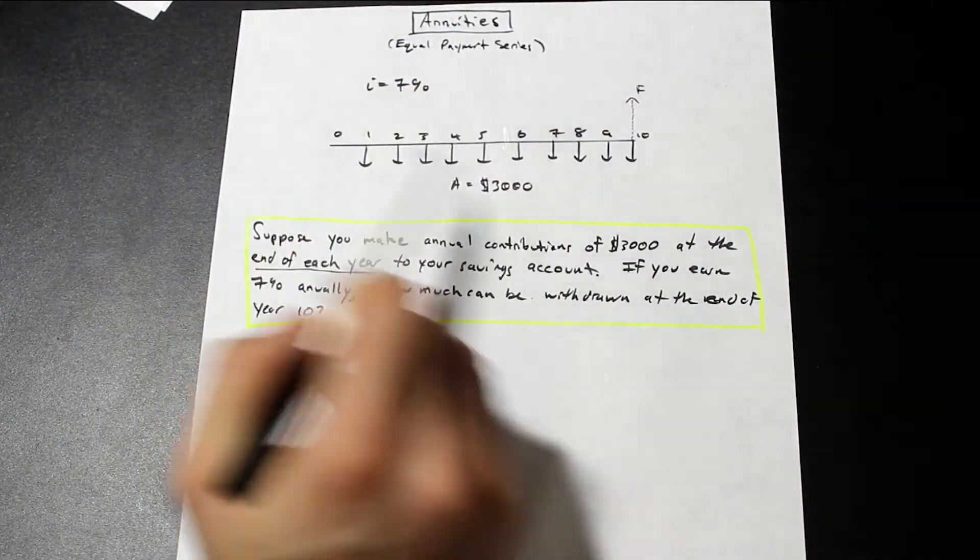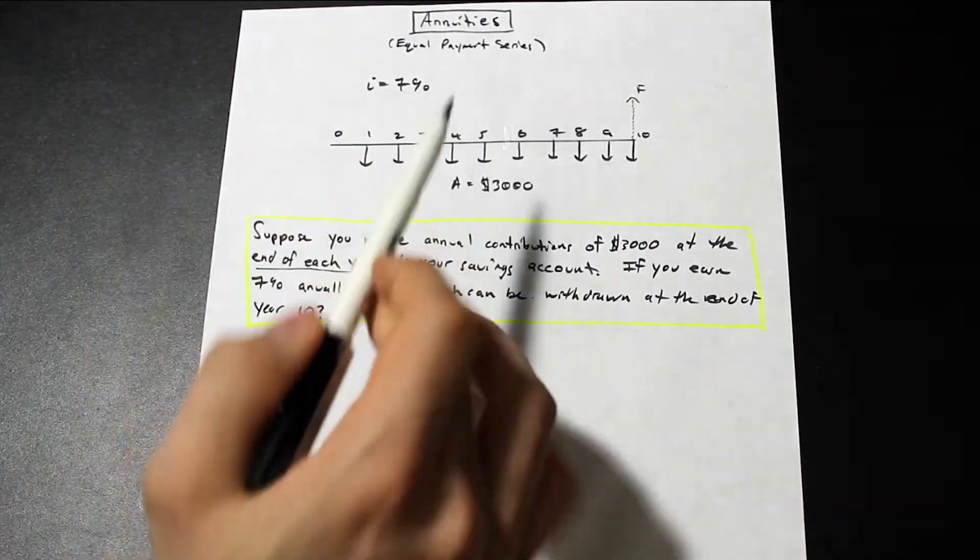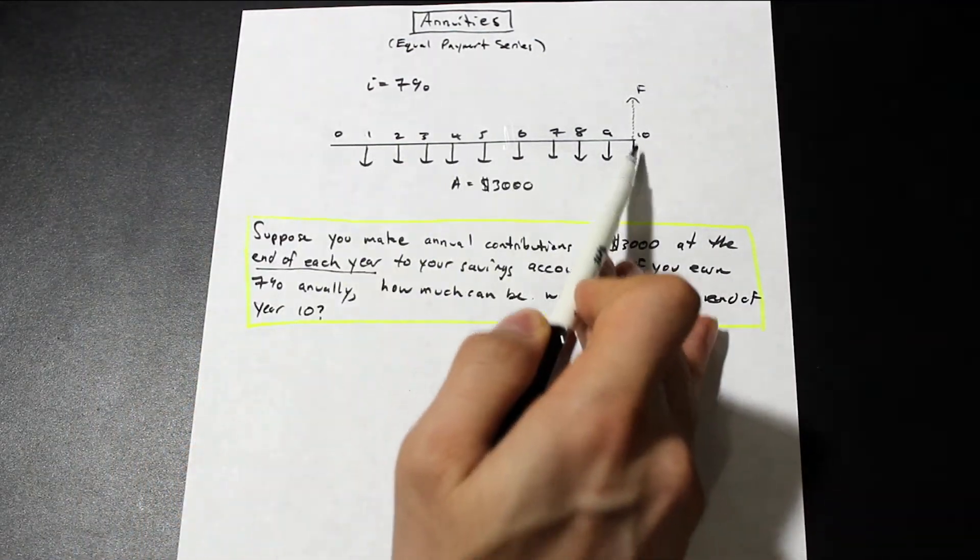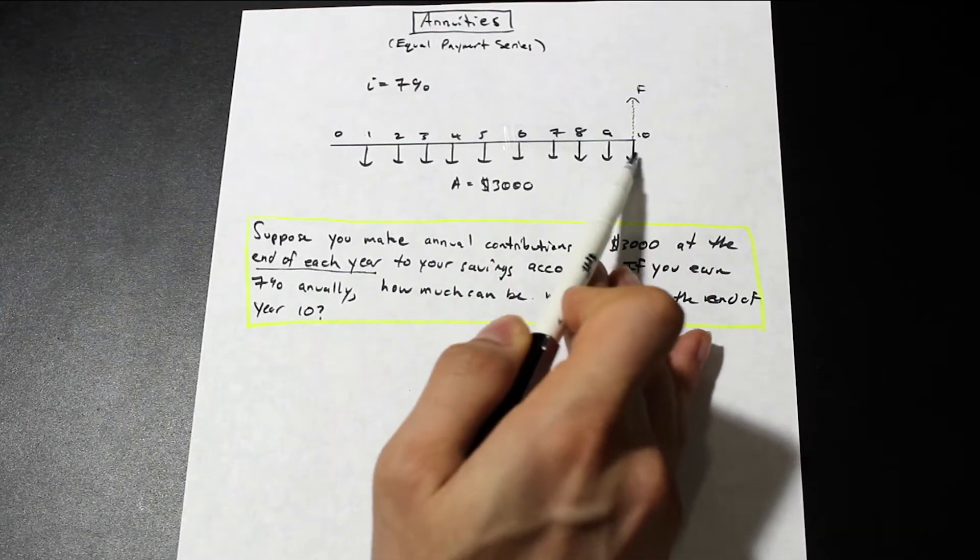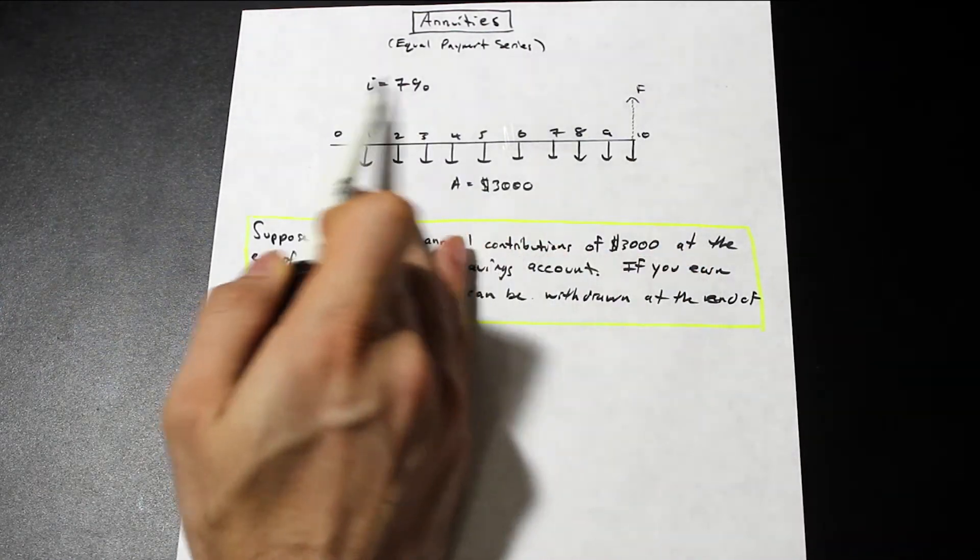So as you can see, I wrote this out a little neater, and this is what we just went through, so we have 10 years of equal payments, and then at the end, we have a payment, and we have our F value, where I equals 7.